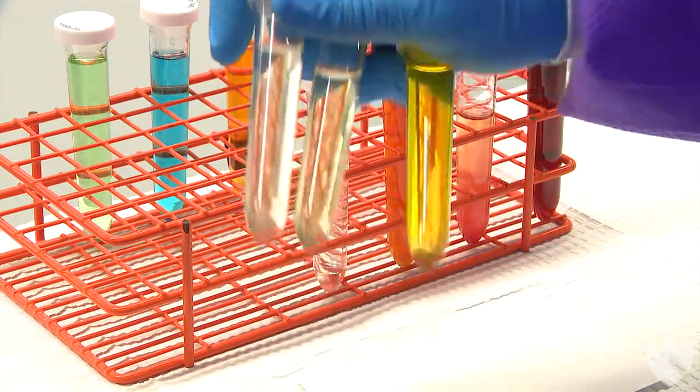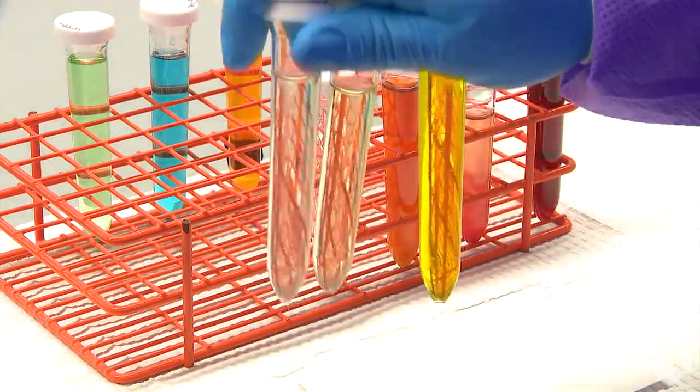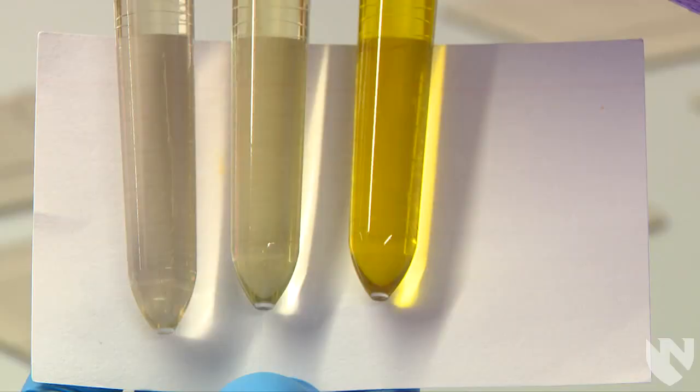To evaluate the urine color, we will hold the urine conical tube against a white background. Here we have a few different variations of yellow. We have a pale yellow, a light yellow, and a darker yellow.